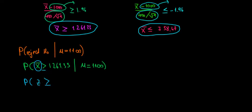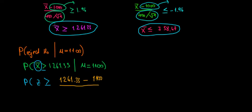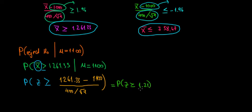We want to convert X̄ into our Z score — greater than or equal to the difference between the sample mean and the population mean. By how many standard errors is 1261.33 away from the true population mean of 1100? The standard error is the ratio of the standard deviation of 400 over the square root of n. What Z value do we get? The probability that the Z score is greater than or equal to 1.21.